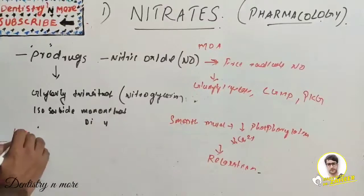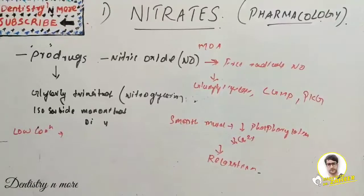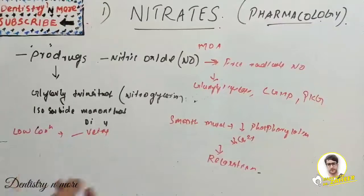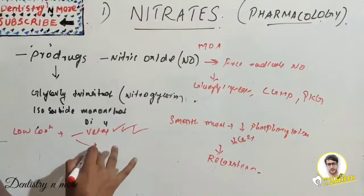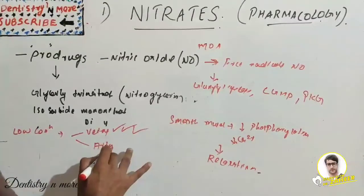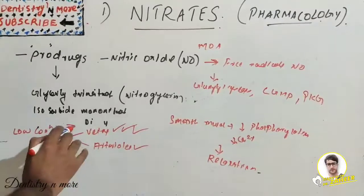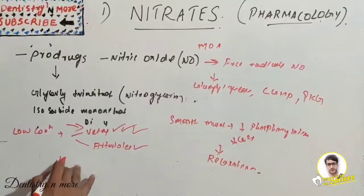In low concentration, what happens with nitroglycerin is it preferentially dilates the veins more than the arterioles. So veins are dilated more rather than the arterioles. The dilation is more with the veins, so it decreases venous return.